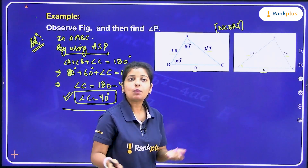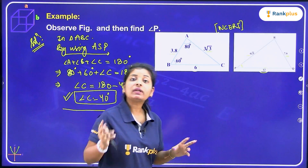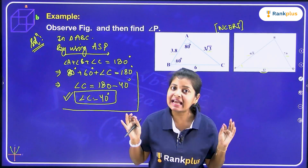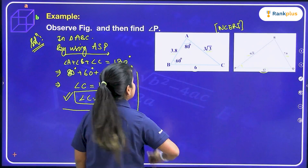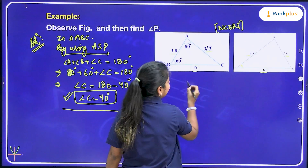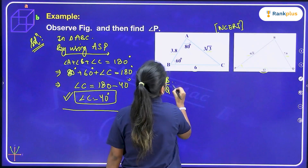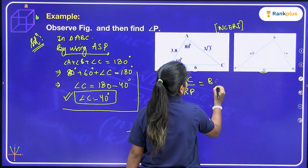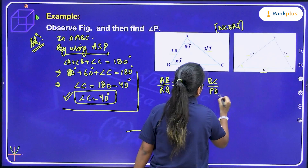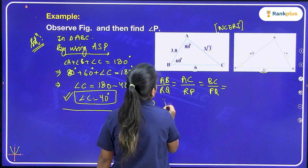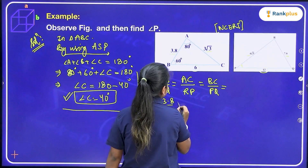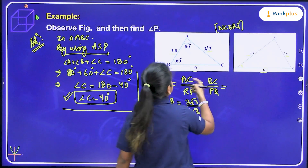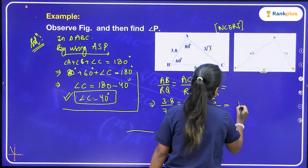So if the ratios are equal, these two triangles are similar. AB upon RQ equals AC upon RP equals BC upon PQ, that is 3.8 upon 7.6 equals 3√3 upon 6√3 equals 6 upon 12, which equals 1 upon 2. That means the ratio is the same — these two triangles are similar.